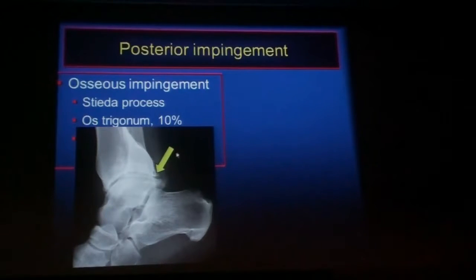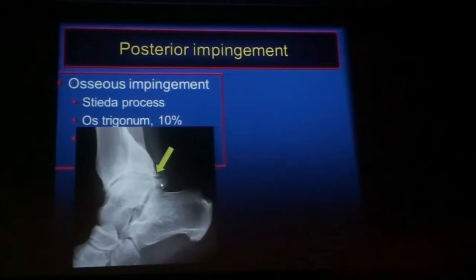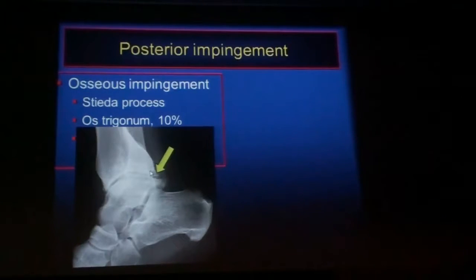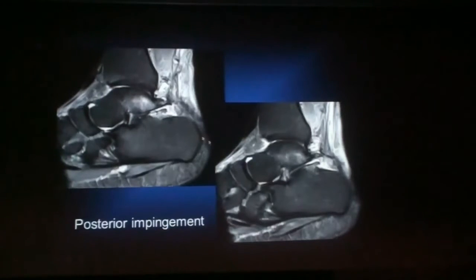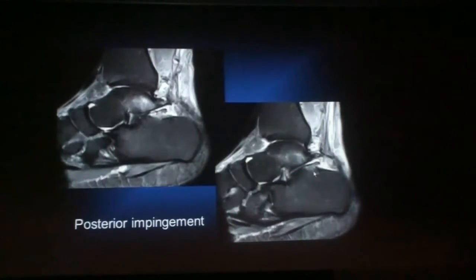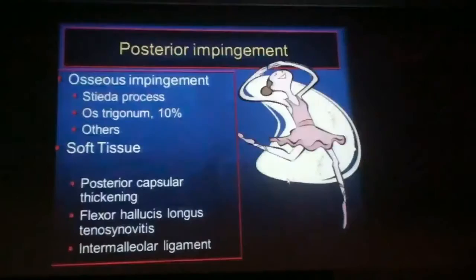When the posterior malleolar fracture heals, it is often minimally displaced and can cause more coverage of the talus and secondary impingement. Here's an example of an elongated Stieda process with a pseudocleft formed by the calcaneus. You can see the marrow edema and the bony as well as soft tissue changes compatible with impingement.